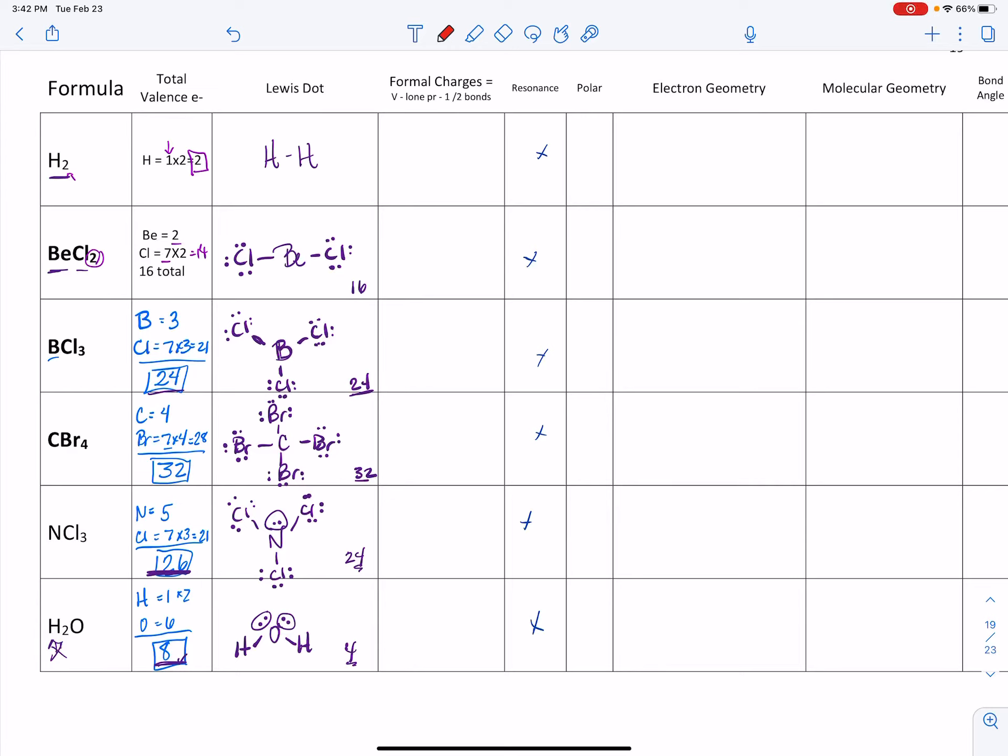We're going to write down the formal charges for some of these compounds. What did I say about hydrogen? Hydrogen is always going to be zero. It just is. But let's practice it one time.